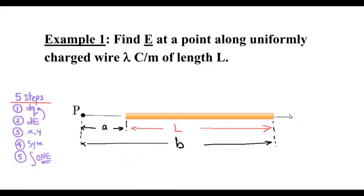In this video we are going to find the electric field due to a uniformly charged wire. I assume a wire placed on the x-axis with a uniform charge distribution. The charge density is called lambda, in coulombs per meter, the wire has a length L, and it is required to find the electric field at point P.